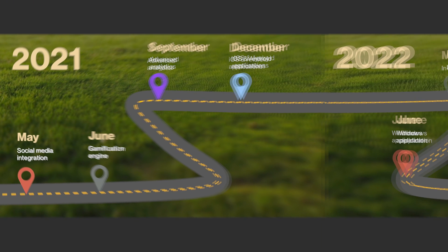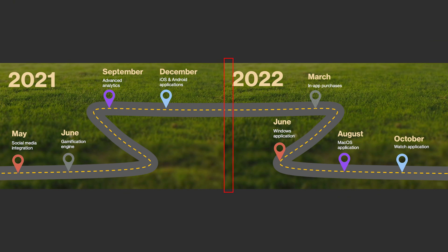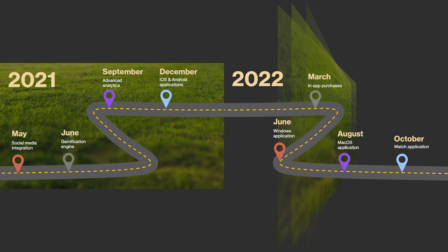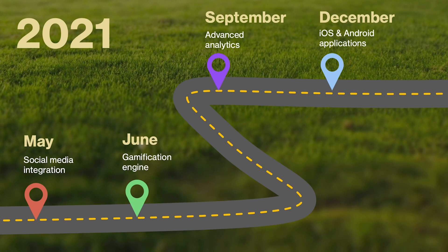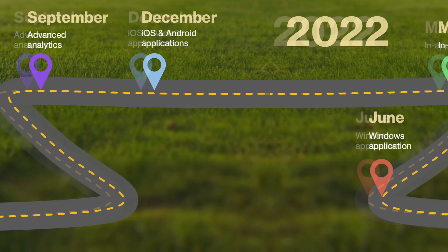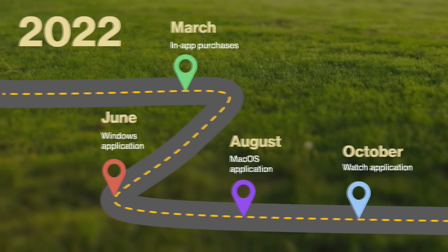I used another trick, which is to flip the grass horizontally between the first and the second slide to ensure a seamless transition.